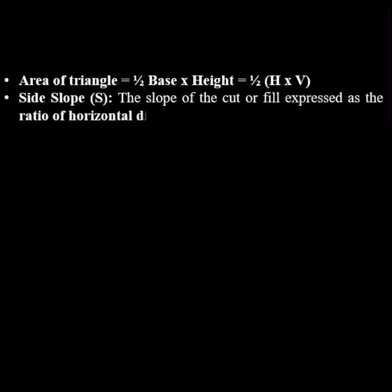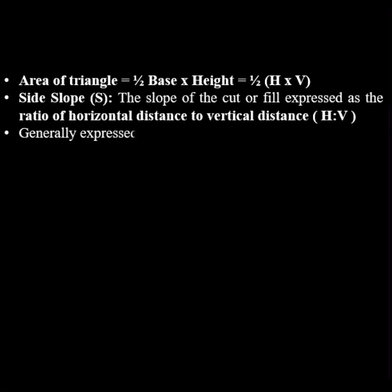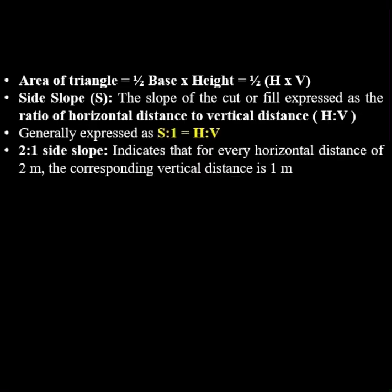It is expressed as S:1 = H:V. For 2:1 side slope, comparing it with S:1 = H:V, S:1 = 2:1, means S is equal to 2.